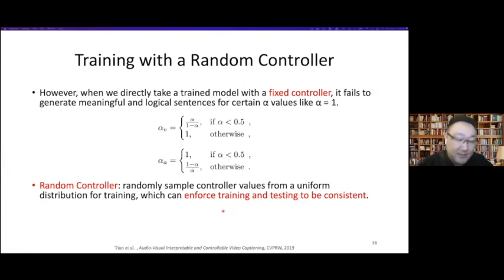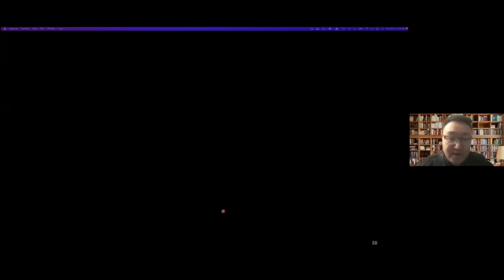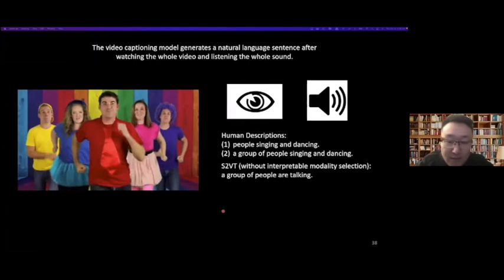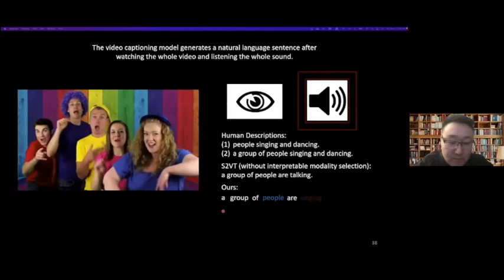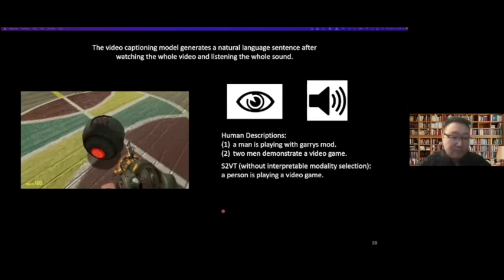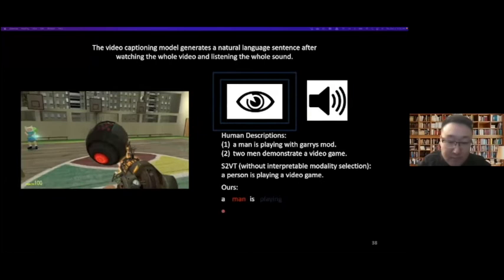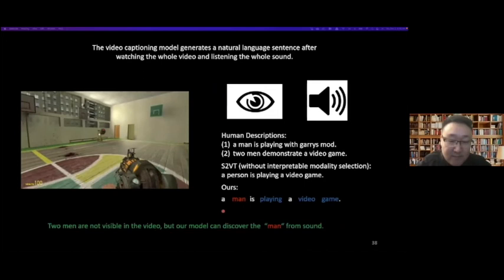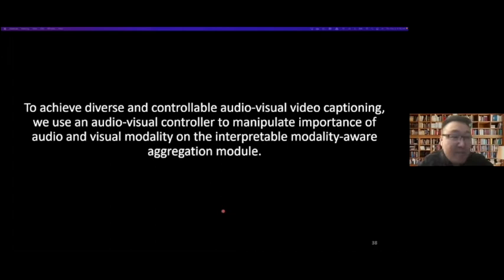Here are our interpretability results. Our model can find the main words related to sound from the audio. Then for the controllable captioning results, using a single trained model with different alpha values set during inference, we can obtain different predictions for the same video. This is very interesting — when we penalize the model to use all information, we know there's a woman talking but not what she's saying. When we add more visual information, we learn a man or woman is talking about specific subjects.